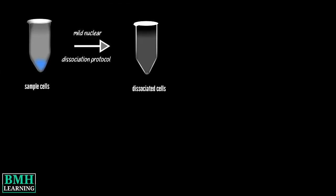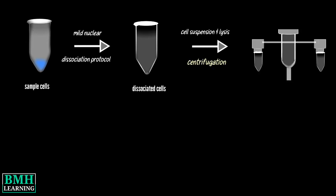In order to isolate and sequence RNA inside the nucleus, snRNA-seq involves using a quick and mild nuclear dissociation protocol. The resulting dissociated cells are suspended and the suspension is generally lysed, allowing the cell nuclei to be separated from their cytoplasmic lysates using centrifugation.